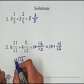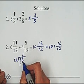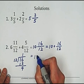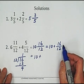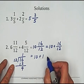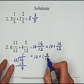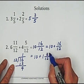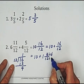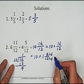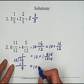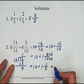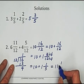16 divided by 12 is 1 remainder 4. So you got 10 plus 1 and 4 over 12. Then we can simplify 4 over 12 by dividing 4 to the top and bottom. So we have 10 plus 1, 11 and 1 over 3. So the answer is 11 and 1 over 3.